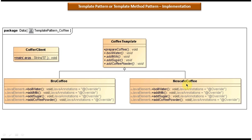Below you can see BrewCoffee and Nescafe classes. Both are concrete classes that extend the CoffeeTemplate abstract class and provide implementation of the abstract methods: boil water, add milk, add sugar, and add coffee powder. The CoffeeClient will use either the BrewCoffee class or the Nescafe class to prepare the respective coffee. Now we will see the code in Eclipse.